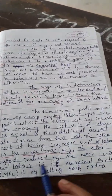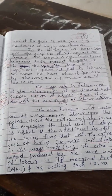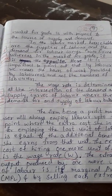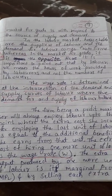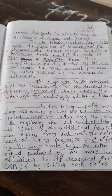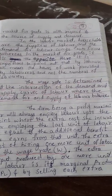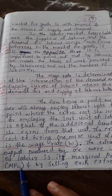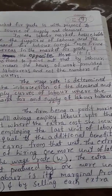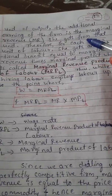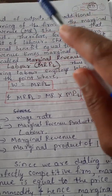The marginal product of labor is the additional output produced by hiring one more unit of labor. For example, if a firm has eight laborers and wants to hire a ninth, the output produced by that ninth laborer is the marginal product of labor. By selling each additional unit of output, the additional earning of the firm is its marginal revenue.